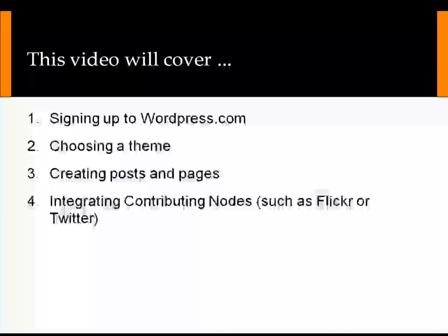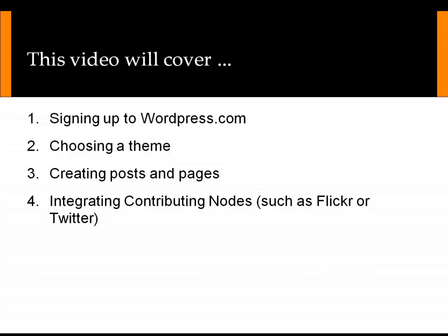We are going to cover four things. Firstly how to sign up to WordPress.com. Secondly we're going to look at choosing a theme, which is the visual look of your WordPress presence. Then we're going to look at creating both posts and pages and the difference between those two things. And finally we're going to look at integrating your contributing nodes — whatever other tools you've chosen — but we're going to use specific examples of Flickr and Twitter.